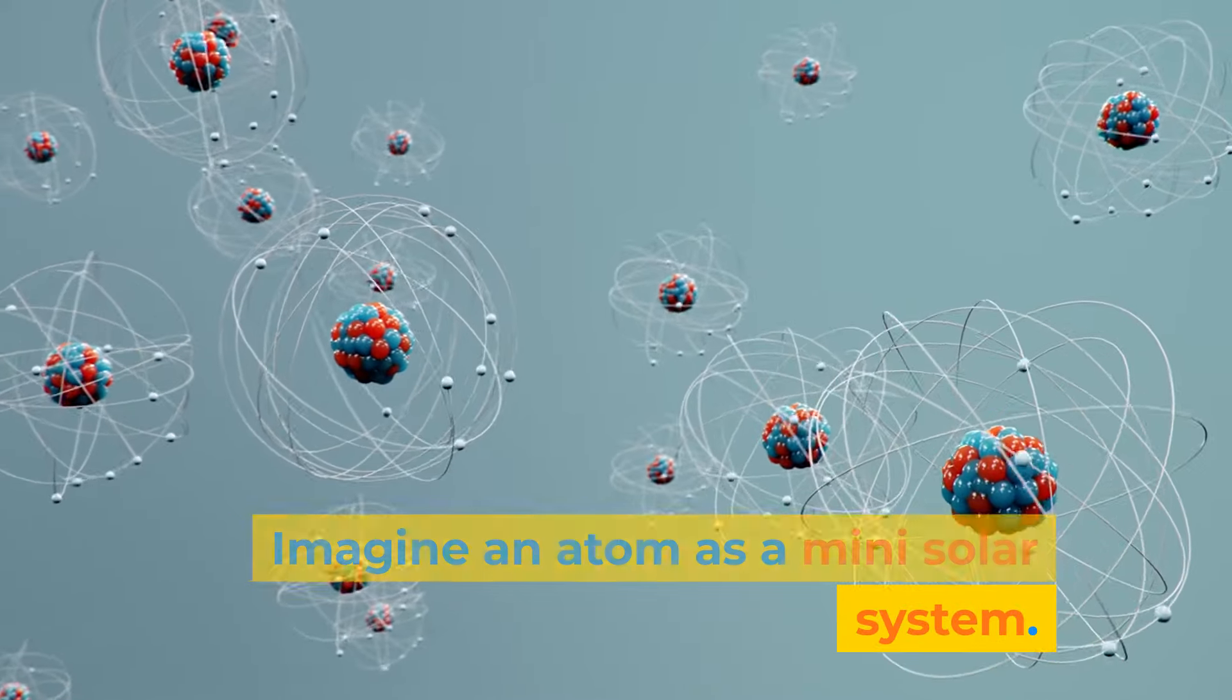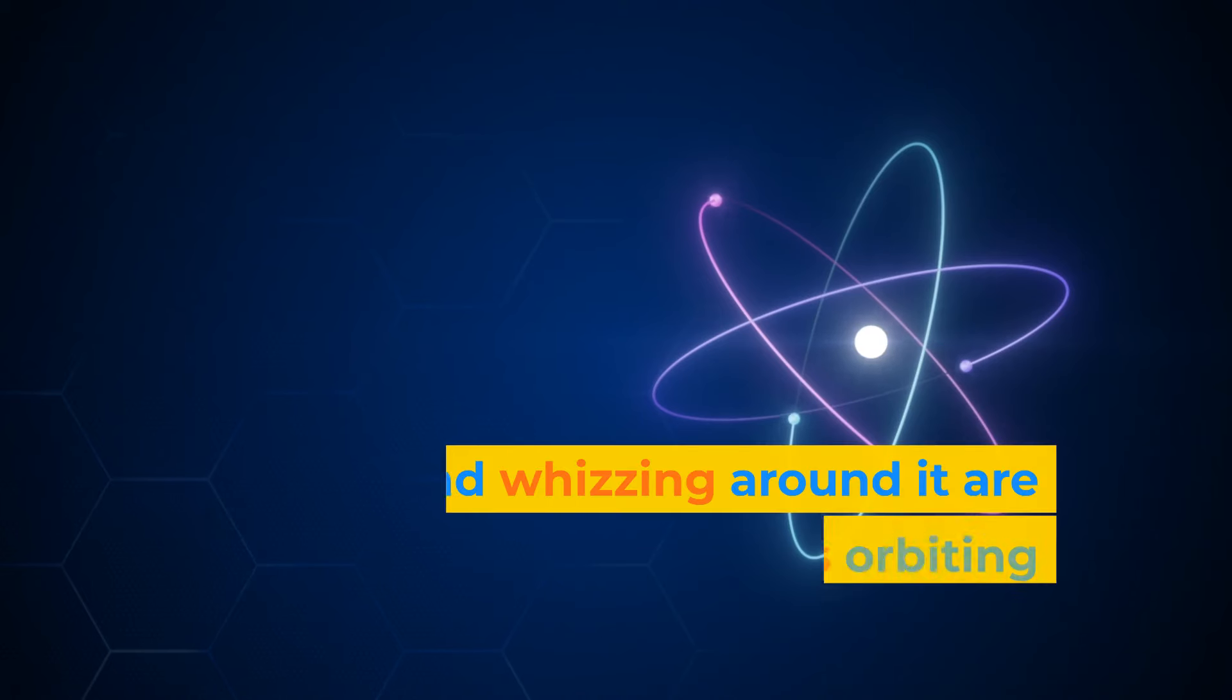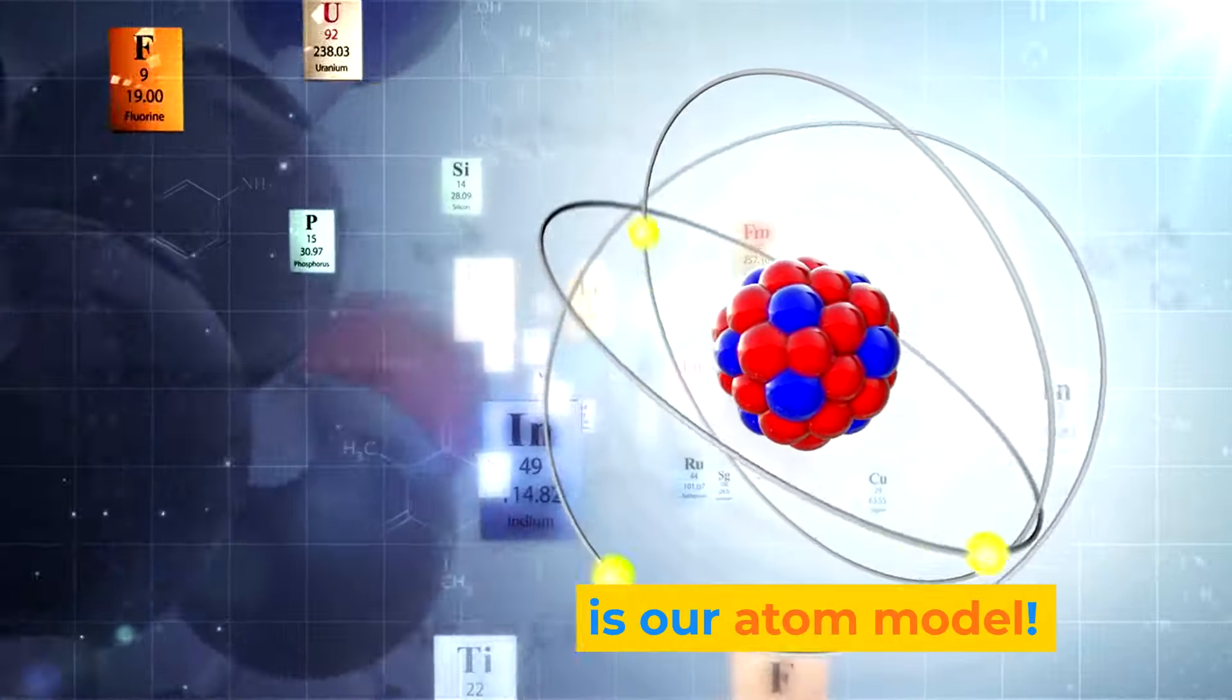Imagine an atom as a mini solar system. At its center, there's a nucleus, like the sun. And whizzing around it are electrons, like planets orbiting their star. This is our atom model!